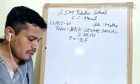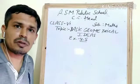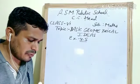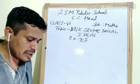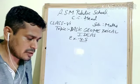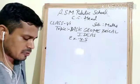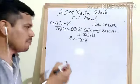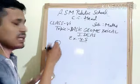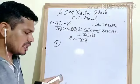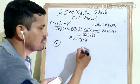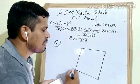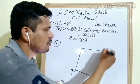In exercise 4.5, they are asking us to draw a rough sketch of a quadrilateral PQRS. We are discussing a rough sketch of a quadrilateral PQRS. This type of quadrilateral PQRS is what we will draw.